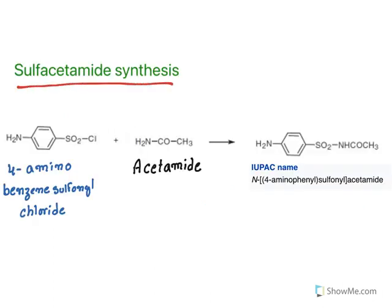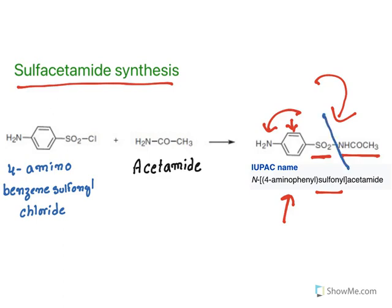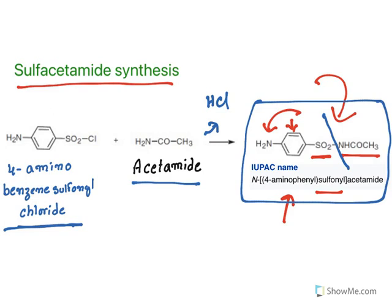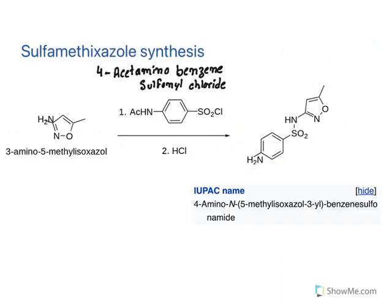Sulfacetamide synthesis is in the syllabus. The IUPAC name is 4-aminophenylsulfonyl acetamide — at the fourth position an amine group is present on the phenyl ring, with a sulfonyl acetamide group. The synthesis begins by taking acetamide and 4-aminobenzene sulfonyl chloride; they react releasing hydrochloric acid and forming sulfacetamide. Understanding the structure makes the synthesis straightforward — learn the structure and think about retrosynthesis.